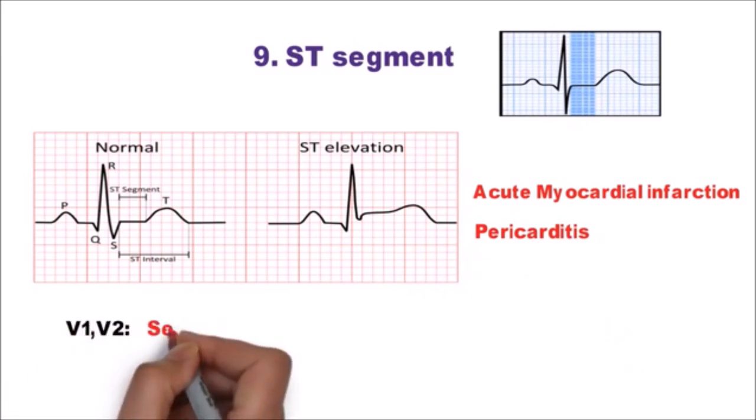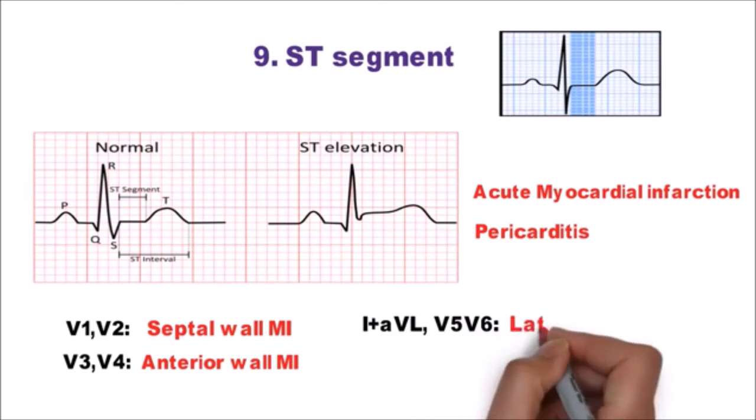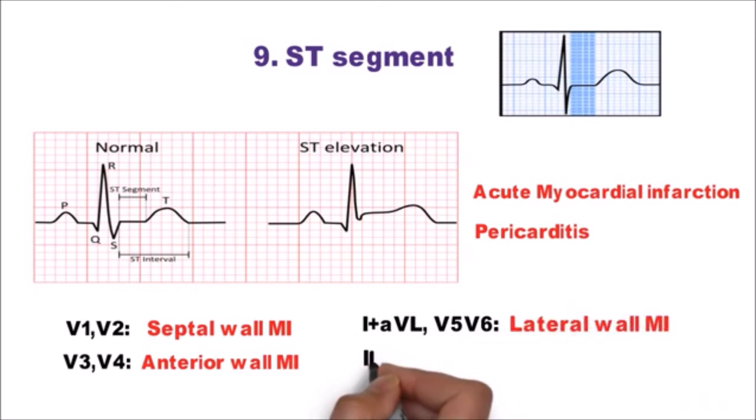If ST elevation is present in V1-V2 then it is septal wall MI. If in V3-V4 then anterior wall MI. If present in lead 1 plus AVL and V5-V6 then lateral wall MI. And if present in 2-3 AVF then it suggests inferior wall MI.